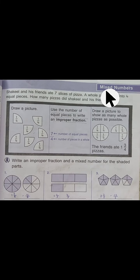Let's come to mixed numbers. Here is an example in front of you. Shaquille and his friends ate 7 slices of pizza. A whole pizza is cut into 4 equal pieces. How many pizzas did Shaquille and his friends eat?